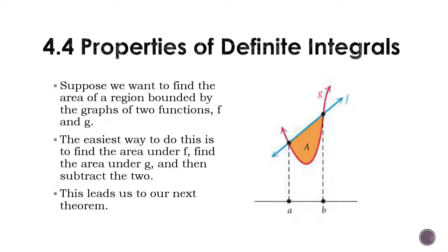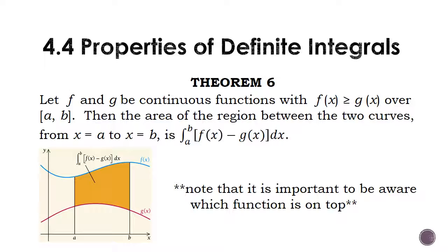This gives us the theorem. Let f and g be continuous functions where f of x is greater than g of x. Now, what that means is f of x is physically above g of x. The y values for f of x for matching x's are higher than g of x. So, f of x is on top. We're going from the x values a to b. The area of the region between the two curves is basically the integral of the difference of these two functions. So, you're going to do the integral from f of x minus g of x. And again, it's really important to be aware which function is higher than the other, because that's the one you want to go first.